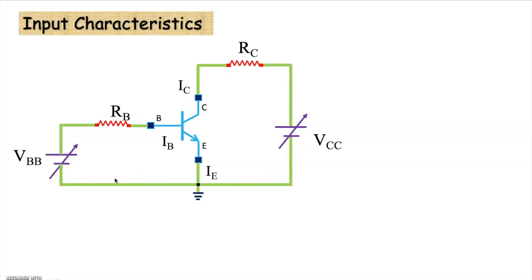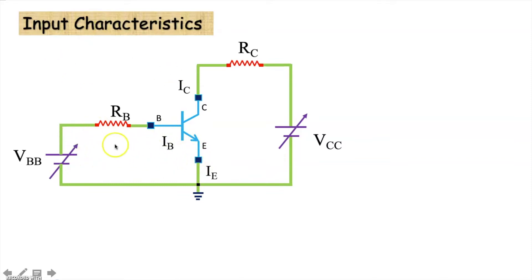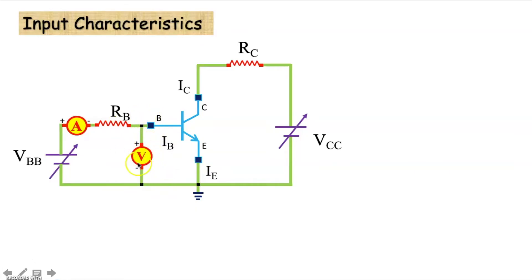Here we have an NPN transistor which is connected in common emitter configuration. We have the voltage source at the base-emitter circuit and the voltage source at the collector-emitter circuit. This is the input circuit and this is the output circuit. Input characteristics is a relationship between the input voltage and input current — that is, the voltage between base and emitter terminal and the base current. To measure the base current, we connect an ammeter in series, and to measure the voltage between base and emitter we connect a voltmeter. While measuring, we must ensure that the collector-emitter voltage — the output voltage — remains constant.